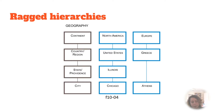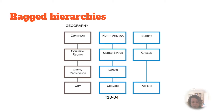Both ragged and unbalanced hierarchies have branches with varying depths. A typical example is a geography or sales territory dimension. In this example, one branch has the continent of North America, country of United States, state Illinois, and city Chicago.